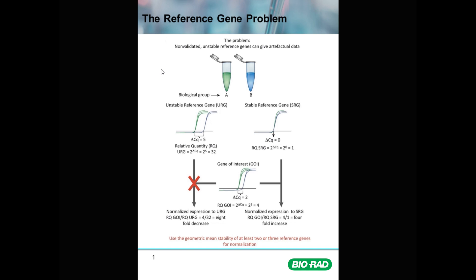In this example we have two biological groups — for example test group A and test group B, or control versus treated cDNA samples. If you're working with an unstable reference gene that changes in its own expression between the two groups, you get a relative quantity that is quite large. If the delta CQ is five between the control and treatment groups, the relative quantity is two to the power of five, which is a 32-fold difference in reference gene expression between control and treated.